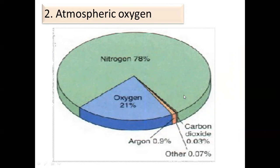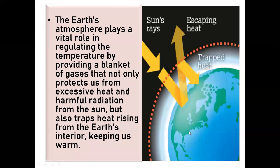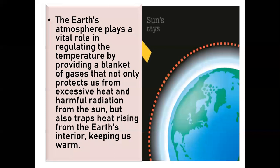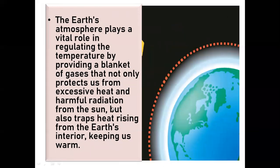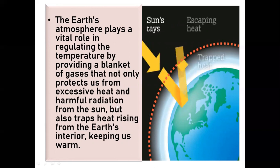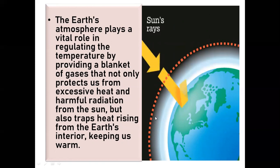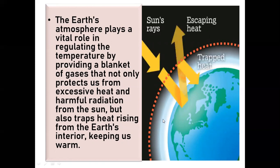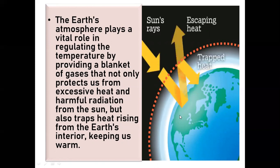Earth's atmosphere is composed of about 78% nitrogen, 21% oxygen, and 1% other gases. The atmosphere plays a vital role in regulating temperature by providing a blanket of gases that not only protects us from excessive heat and harmful radiation from the Sun, but also traps heat rising from the Earth's interior, keeping us warm.